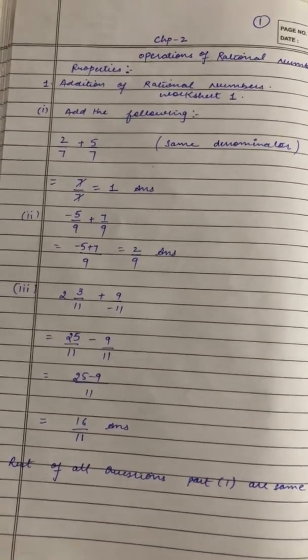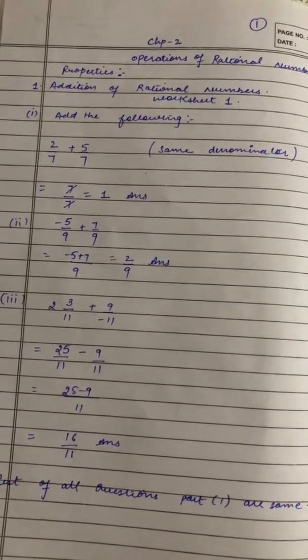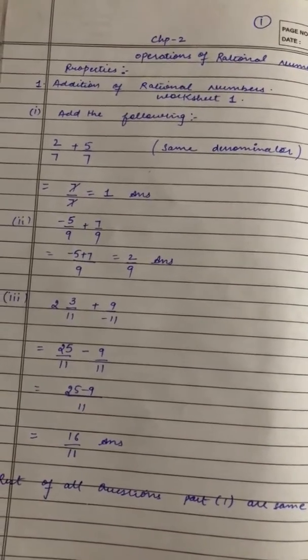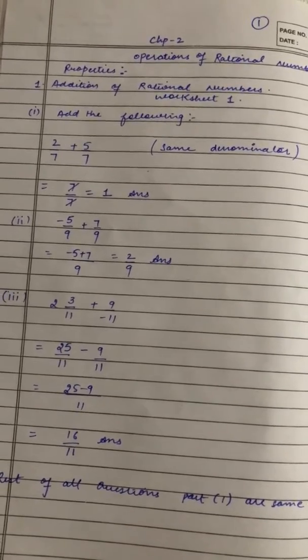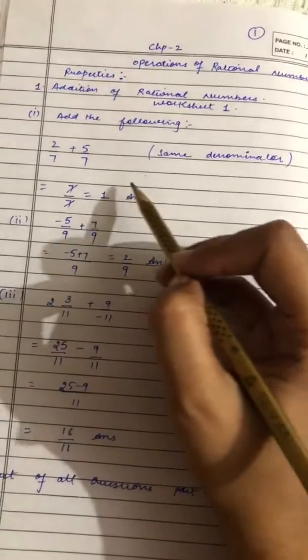Here we have properties. The very first property is Addition of Rational Numbers. Worksheet 1 is here. How do you add rational numbers? We will teach them. I have a question here.